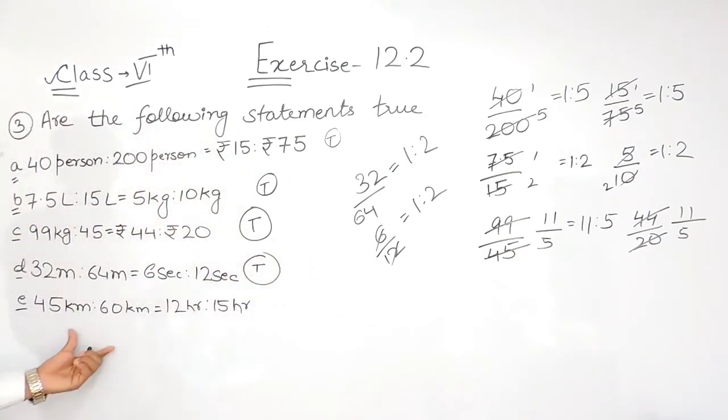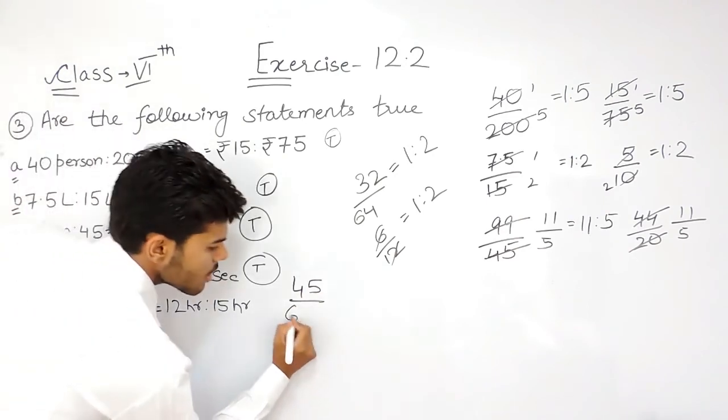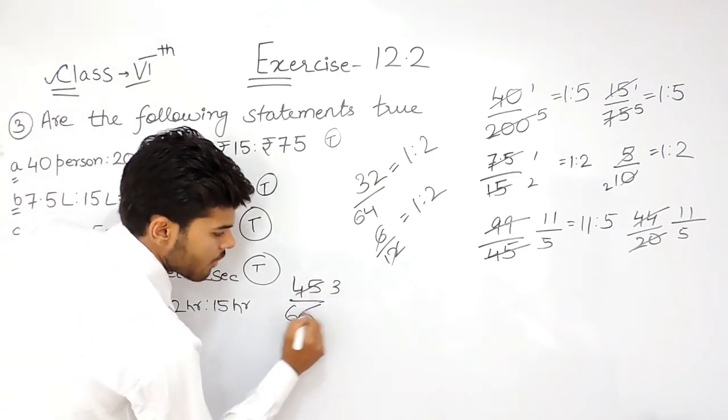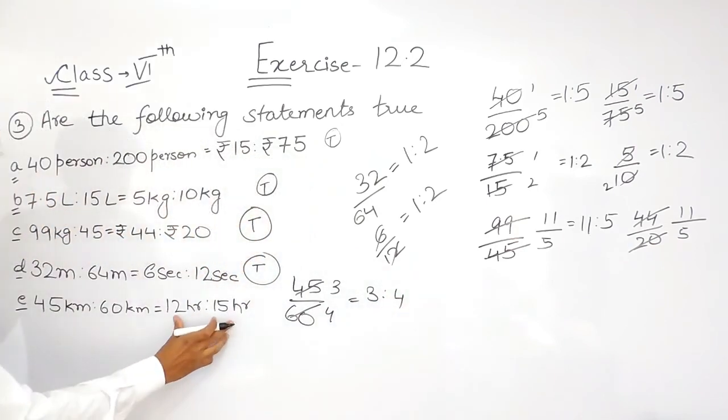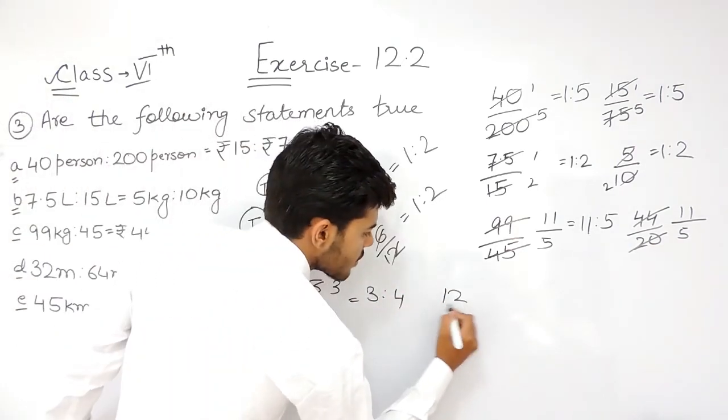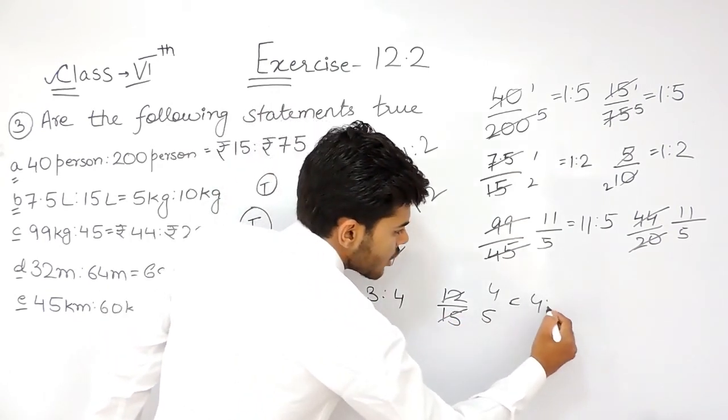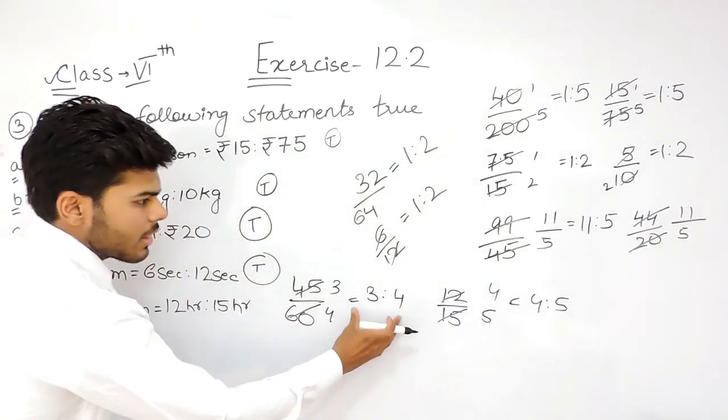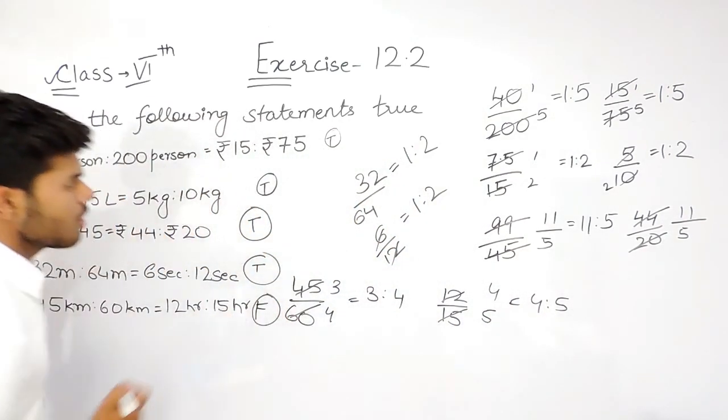And the last one says that 45 divided by 60, so 3 times 15 is 45, 4 times 15 is 60. The ratio is 3 ratio 4 and it is 12 ratio 15. So 3, 4 times 3 is 12, 5 times 3 is 15, that is 4 ratio 5. That's why these two ratios are not equal, that means this statement is false.